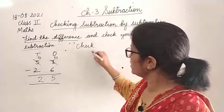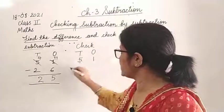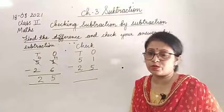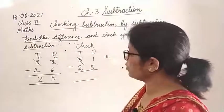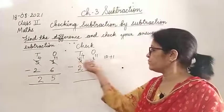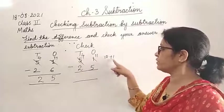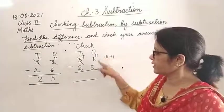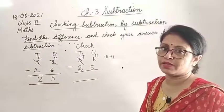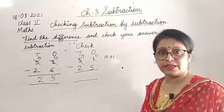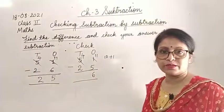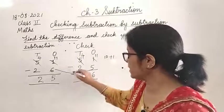Now check: 51 minus 25. 1 minus 5 - can't do it. Borrow from 5 tens, leaving 4 tens. 1 plus 10 becomes 11. 11 minus 5: take away 5, count from 5 - 6, 7, 8, 9, 10, 11 - answer is 6. Then 4 minus 2 is 2. Same answer 26 - wait, we got the same answer matching. Our subtraction is correct.